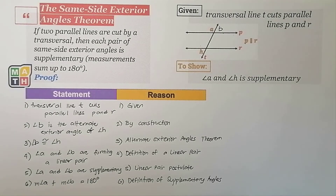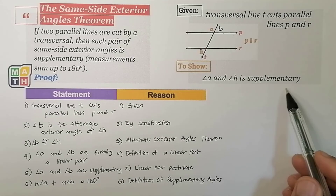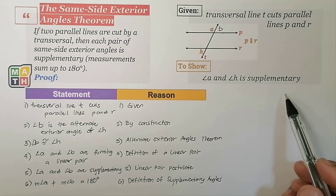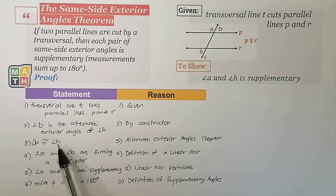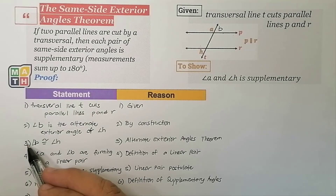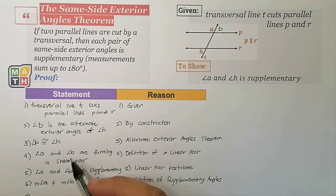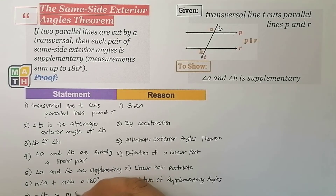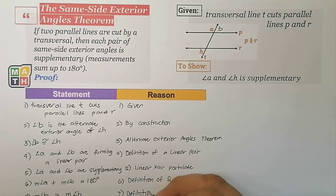Since in statement number six we have the measurement relationship closer to showing supplementary, we also need the relationship between the measurement of angle B and the measurement of angle H to merge into statement six. Statement number seven: since angles B and H are congruent, the measurement of angle B equals the measurement of angle H, by definition of congruent angles.